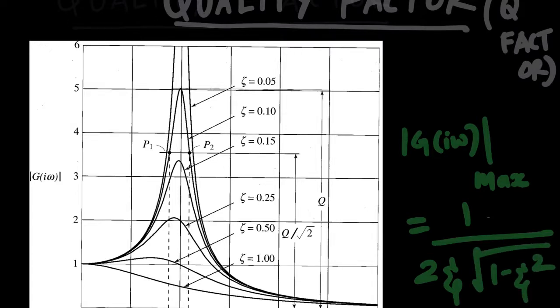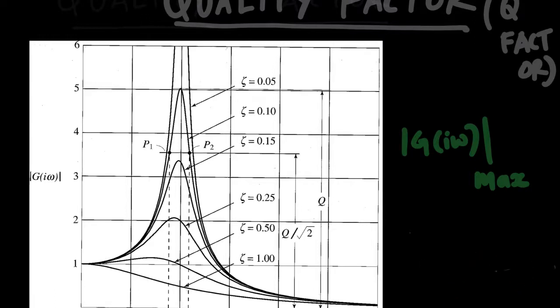Now here we are talking about lightly damped systems where zeta is very small, so this term will be 1. So effectively we will end up with |G(iω)|max equal to 1 divided by 2ζ. This is known as the quality factor or the Q factor of a particular mechanical system.